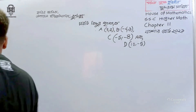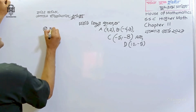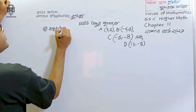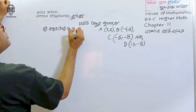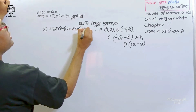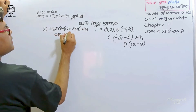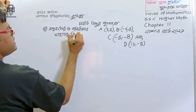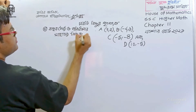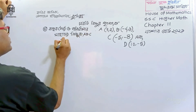I write the question. Draw the figure of triangle ABC and find its area.